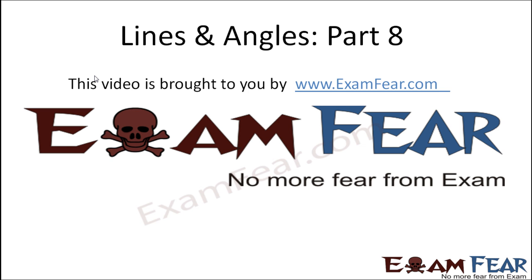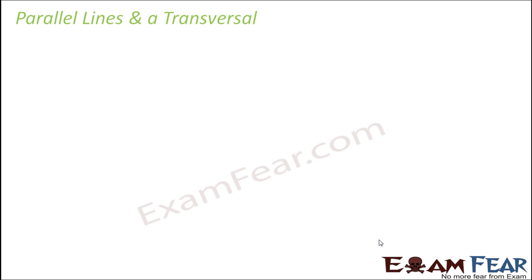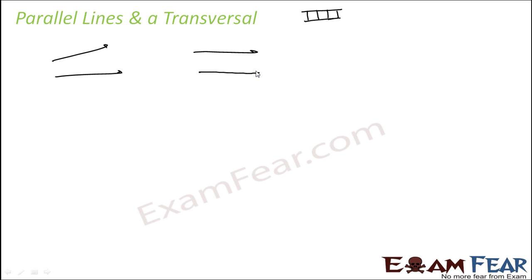Hello friends, this video on lines and angles part 8 is brought to you by examphia.com. Let's understand a new topic: parallel lines and transversal. Two lines are parallel if the perpendicular distance between them is the same across any of these points. A transversal is a line which intersects two or more lines at distinct points.